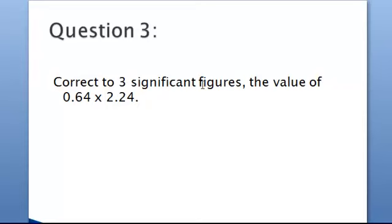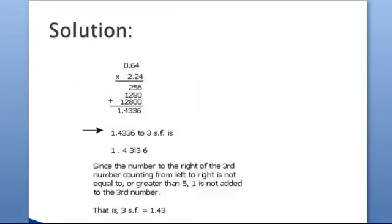Let's look at the solution. When multiplying the two decimals, 0.64 by 2.24, we multiply the same way as if we're multiplying whole numbers.